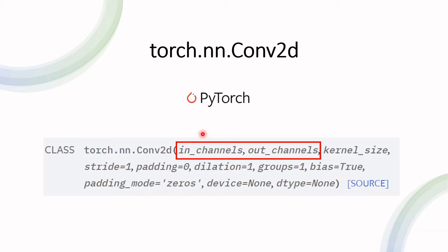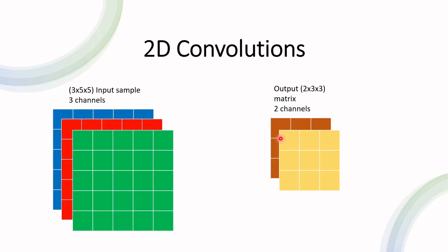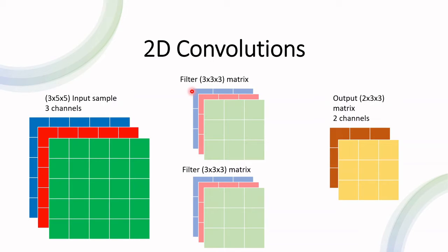In the initial example we just saw, we only had one input channel and one output channel. If we have a color image, we automatically have three input channels — one for blue, red, and green. Let's say we define a layer with three input channels and two output channels. When we define three input and two output channels, the layer looks like this: there are two sets of three kernels, each set referred to as a filter. For each filter, each corresponding kernel is applied to its channel, and then everything is added up — that's how the pixel value is calculated.